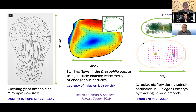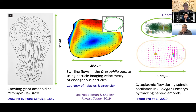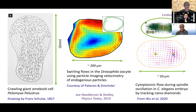Let me start by giving you some examples of observed flows inside of cells. They illustrate that flows take place across a wide variety of scales, from giant amoeboid cells that are crawling. This is one of the very first formal observations of flow inside of cells, from 1857 by Franz Schulze, showing that as an amoeboid cell crawls it has flow patterns in the cytoplasm — an example of a flow tied to a function.